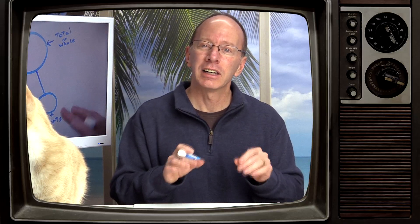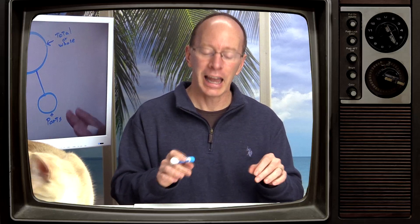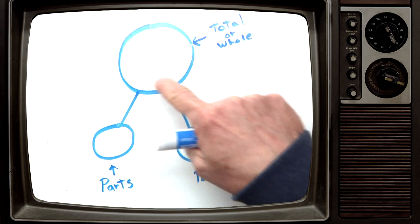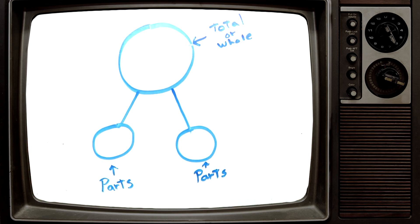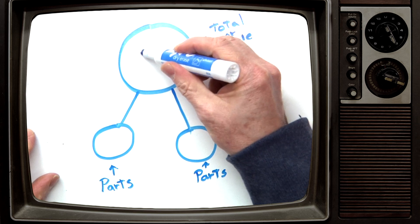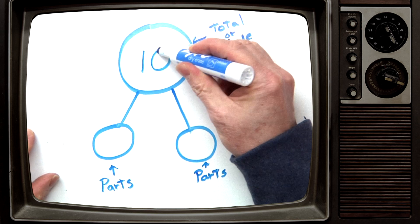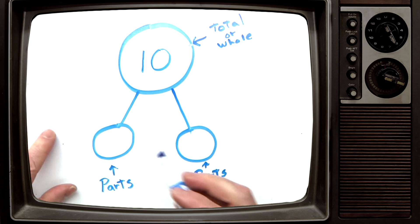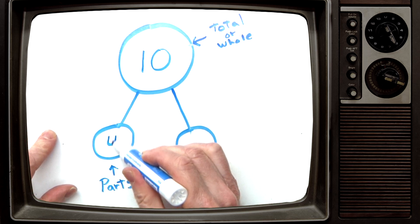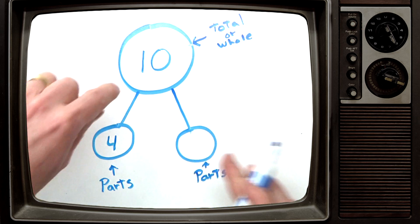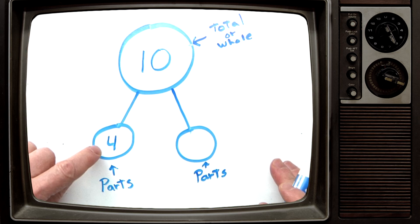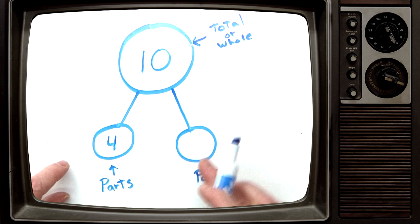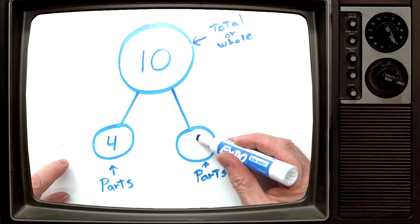A Number Bond is a relationship between a total and its parts. Let me explain here. You usually will have a big circle, and then you have a line down to two circles like this. You might have a number in the middle, which would be 10. And on some homeworks they'll have a number here, like 4. So you have to have a relationship between the total — this is the total — and the parts.